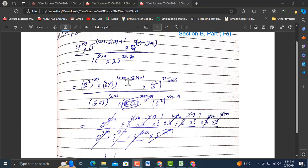So here, 2 raised to power 2 raised to power m, 3 into 15 raised to power 4m minus 2n plus 1, into 3 raised to power 2 raised to power n minus 2n, divided by 2 into 5 raised to power 2m and 5 raised to power 2 into minus n.